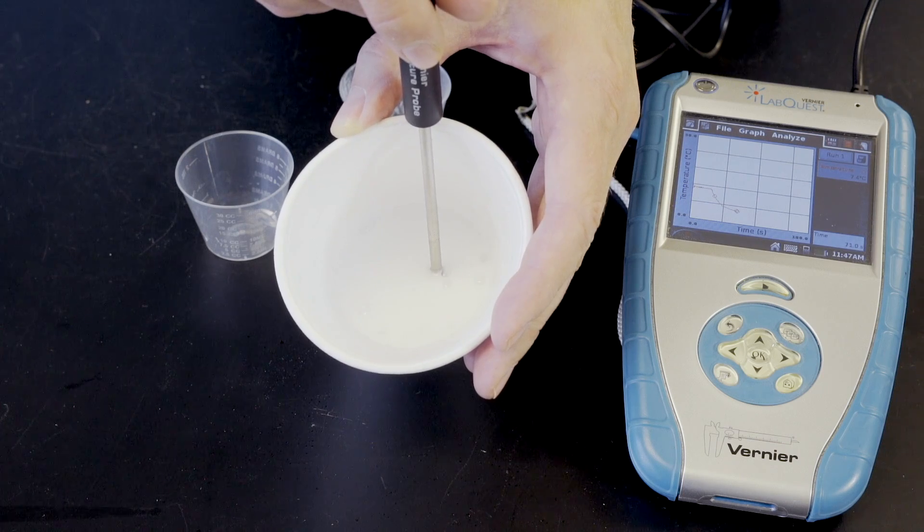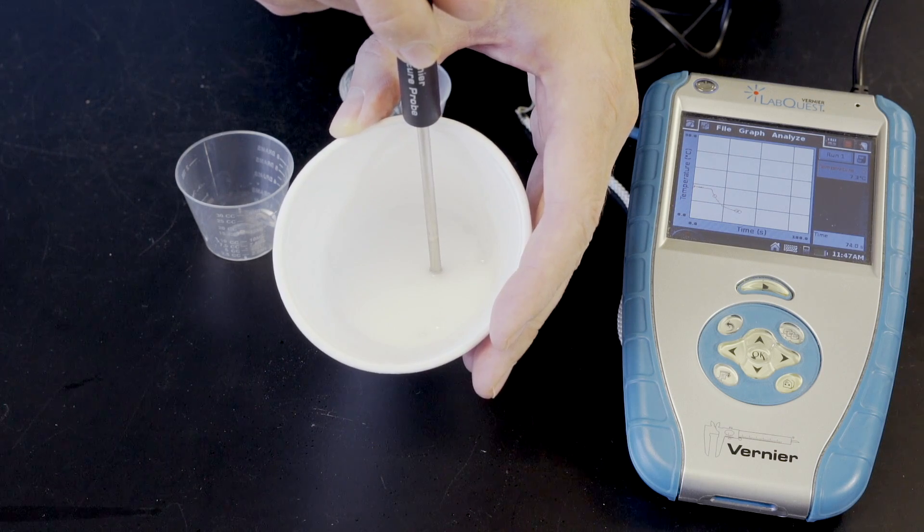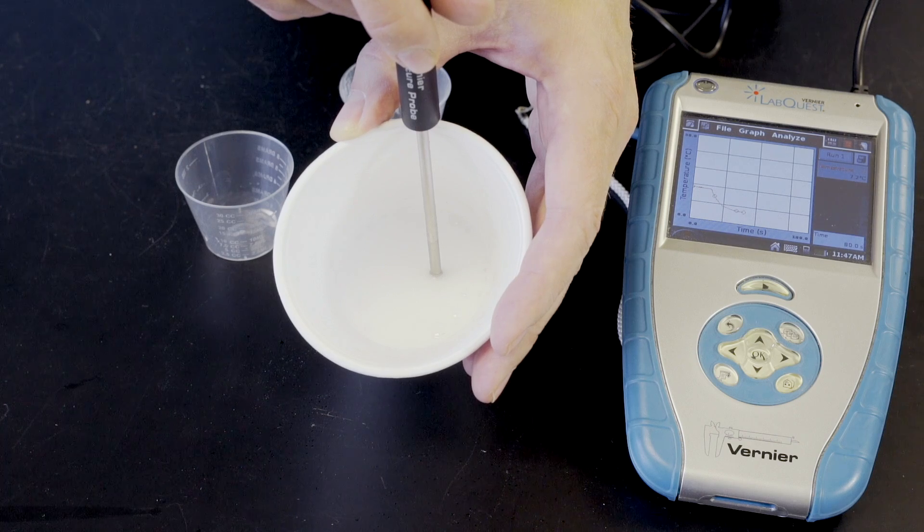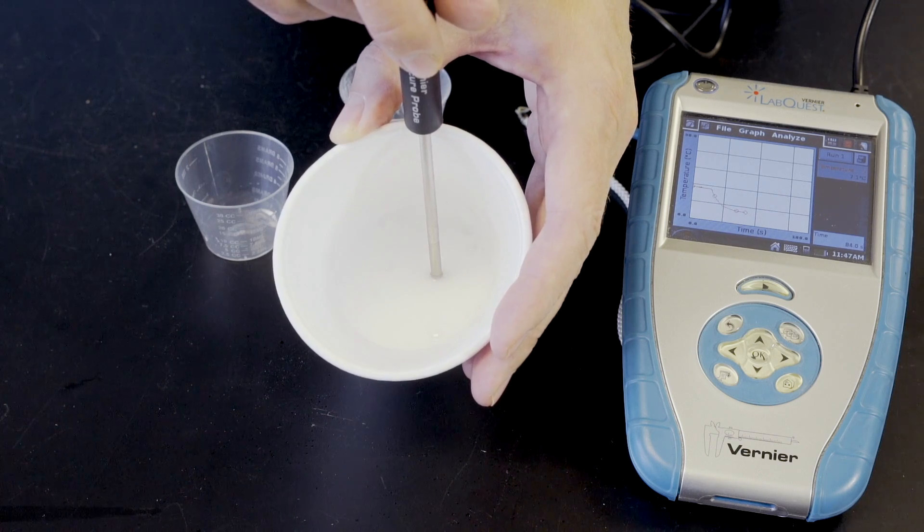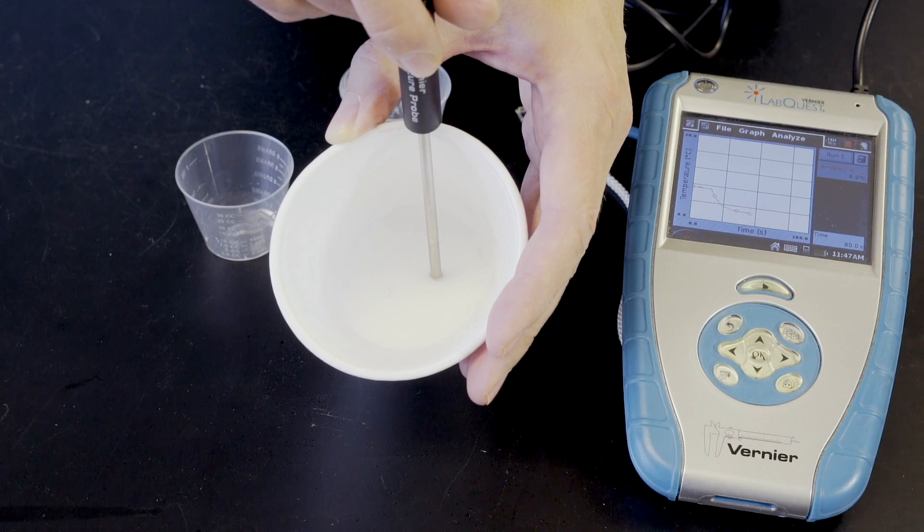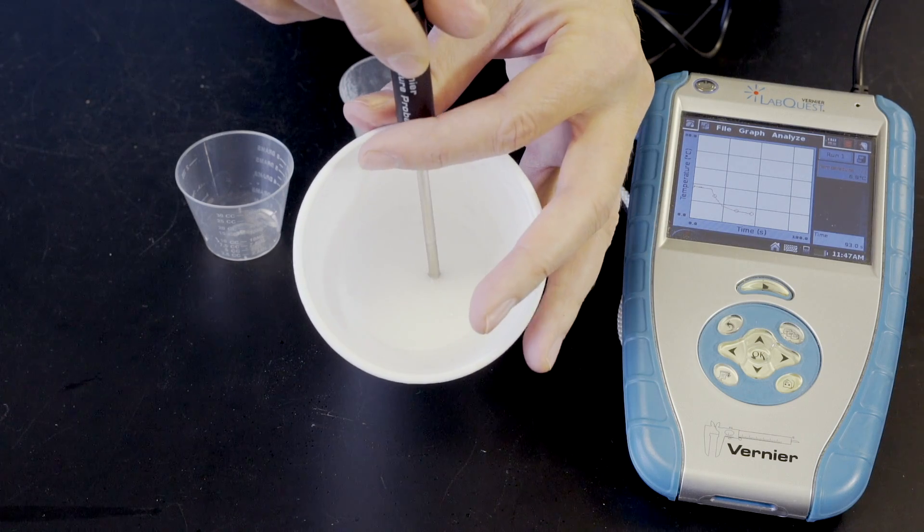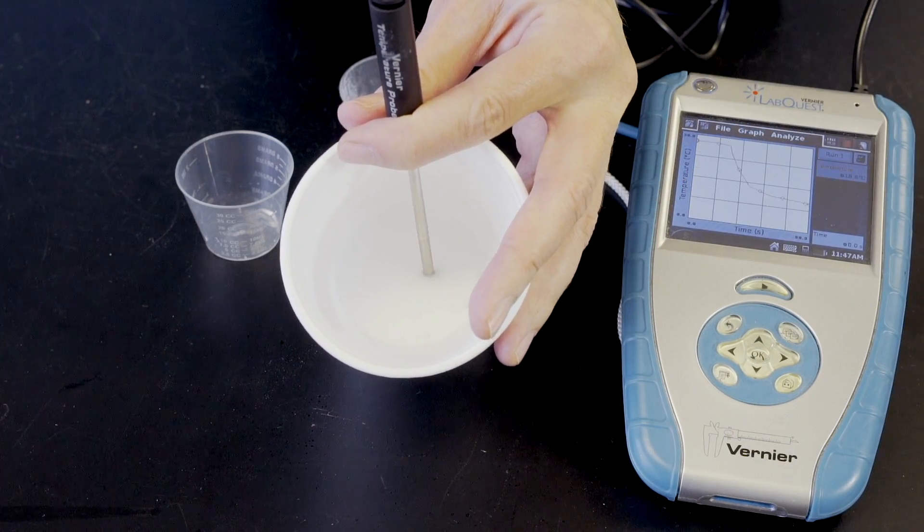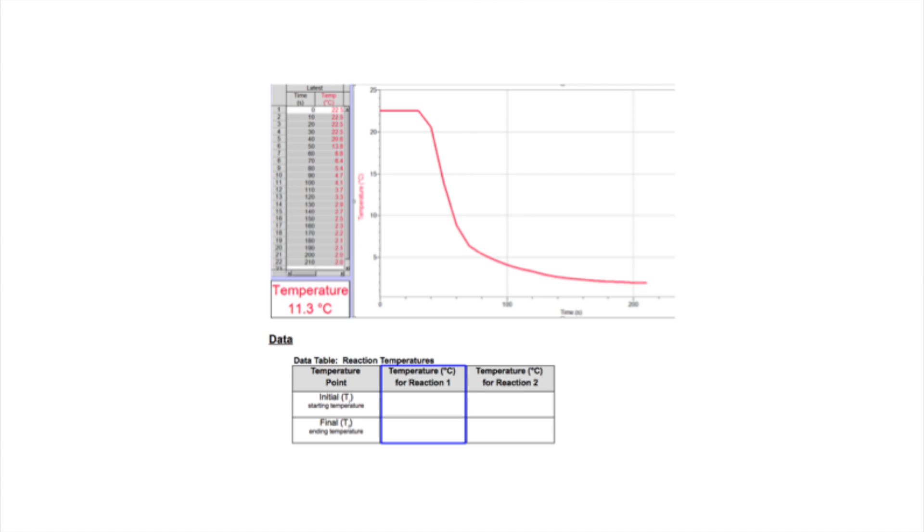Recording continues until a plateau has formed or five minutes has passed. I'm going to let this go just a couple more seconds until I'm sure that my temperature is done changing. At that point I'm going to stop recording. You will use this graph and data table to record the initial and final temperatures into the data table in your lab book and you will use the shape of this graph to sketch into the graph provided on sheet six.